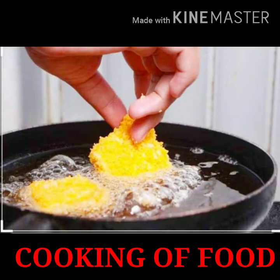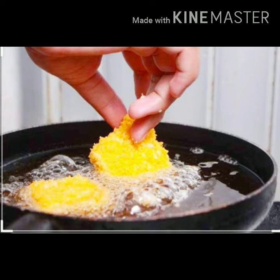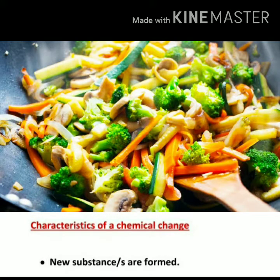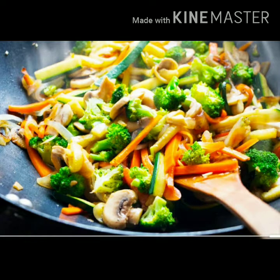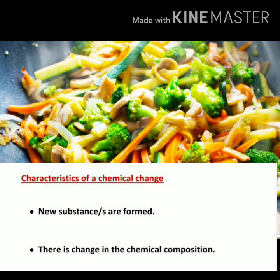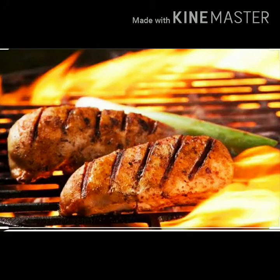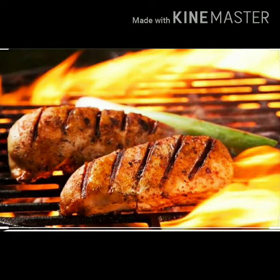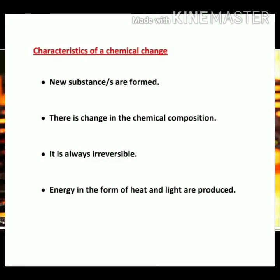The next example is cooking food. In the last class we had done that chopping of vegetables is a physical change because no new substance is formed — the raw vegetable remains raw, only the shape and size change. But once you cook it, we get a completely new substance. The raw vegetable has changed into a cooked one, meaning the chemical composition has changed. You cannot get back the raw vegetable from the cooked vegetable — it is irreversible. And when we cook food, energy in the form of heat is produced. Hence, cooking of food is a chemical change.